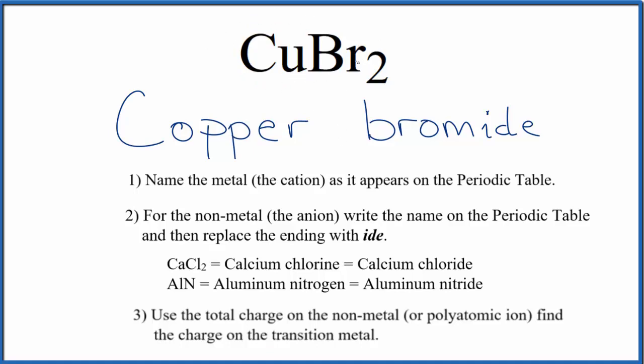So we know that bromine is one minus, and we have two of them. That's two minus, the copper has to be two plus.